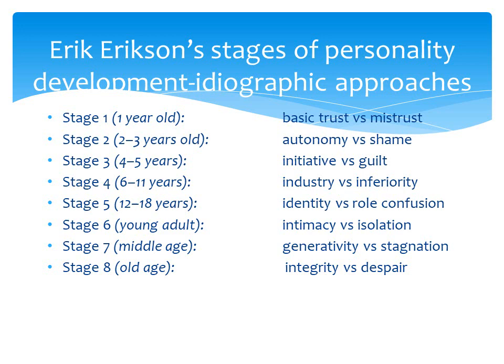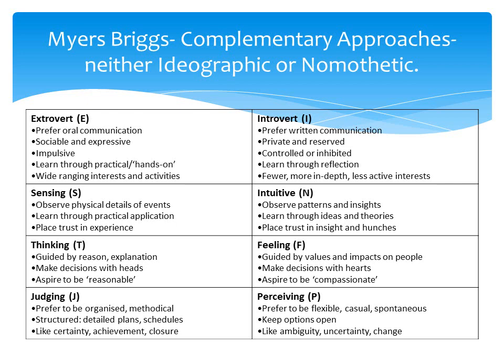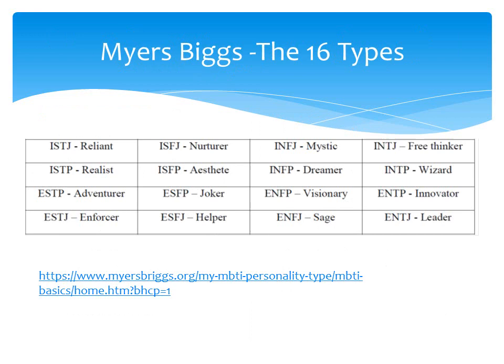A more useful concept is Erik Erikson's stages of personality development, which recognizes that personality isn't something you're born with that remains constant — you go through eight stages from age one through to old age, and your basic personality changes as you develop through your life cycle. Myers-Briggs also links here — the test gives dimensions of E/I, S/N, T/F, and J/P, producing sixteen personality types, which is very good.